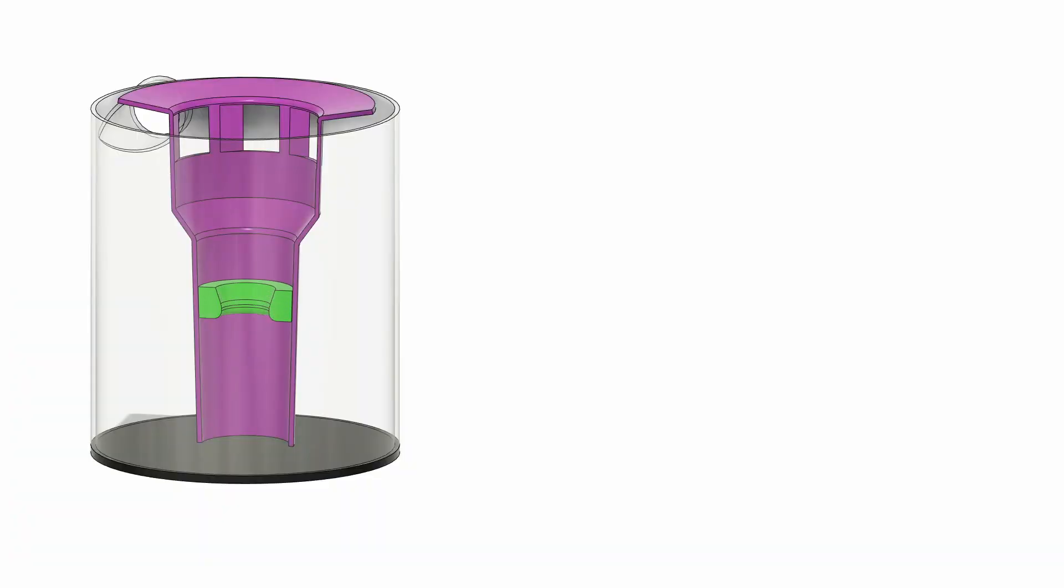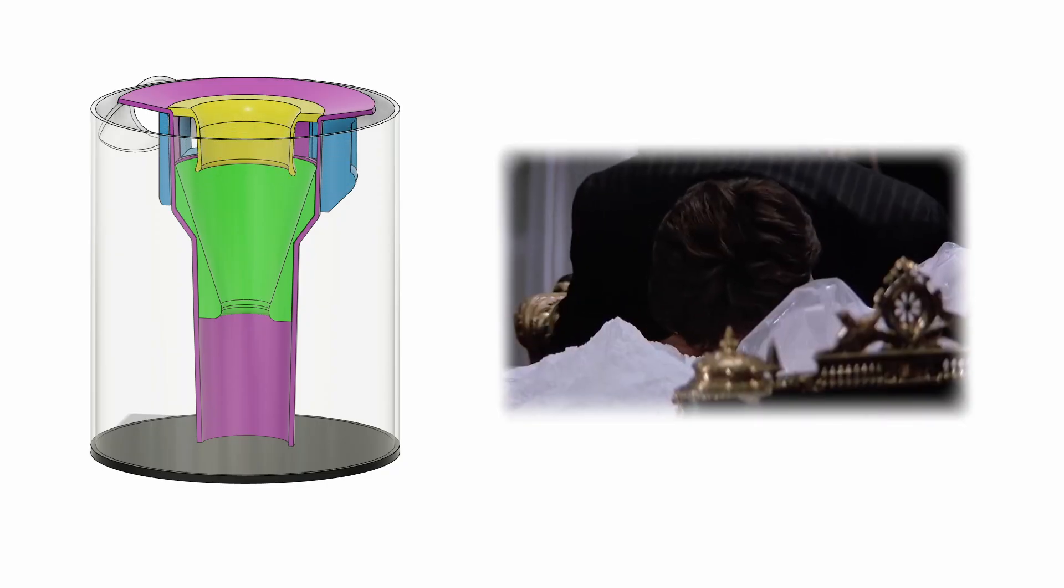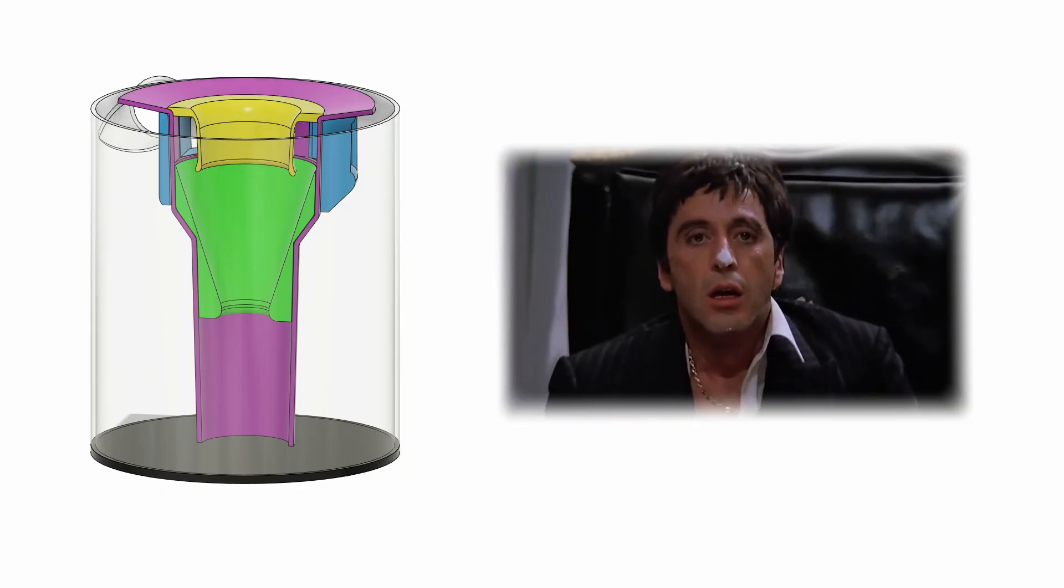My plan is to 3D print a vortex finder and tangential inlets to turn this inner cone into a true cyclonic separator. Hopefully this will allow the vacuum to snort as much as Charlie Sheen and keep on partying.